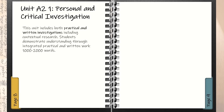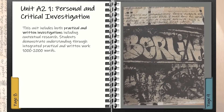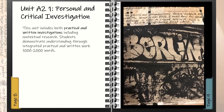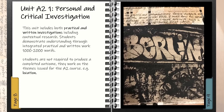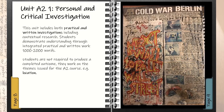The A2 unit begins with a Personal and Critical Investigation. This unit includes both practical and written investigations, including contextual research. Students demonstrate understanding through integrating practical and written work. Students are not required to produce a completed outcome. They work on the theme issued for the A2 course, for example, location.